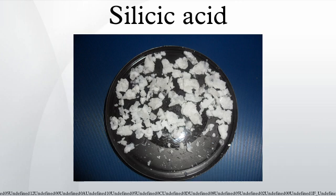Silicic acid, also known as OSA, is a chemical compound and a silenol. Silicic acid is the general name for a family of chemical compounds containing the element silicon attached to oxide and hydroxyl groups. This family of compounds has the general formula SiO x(OH) 4-2x n.